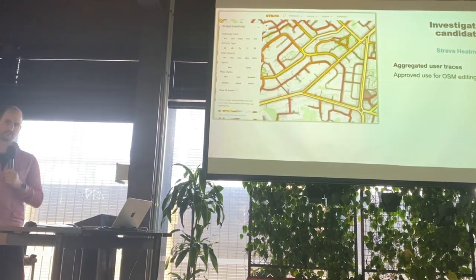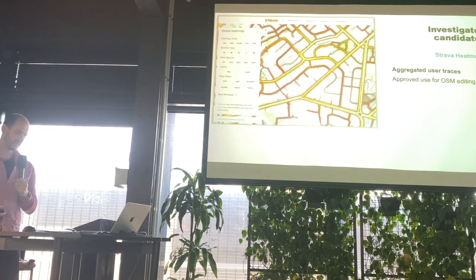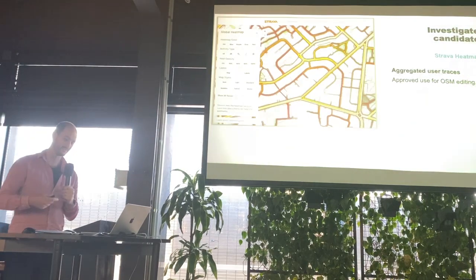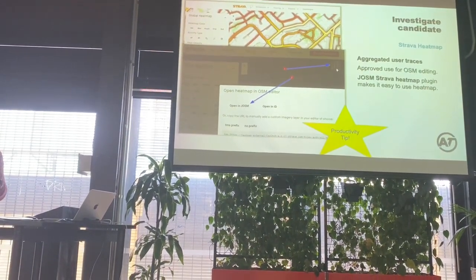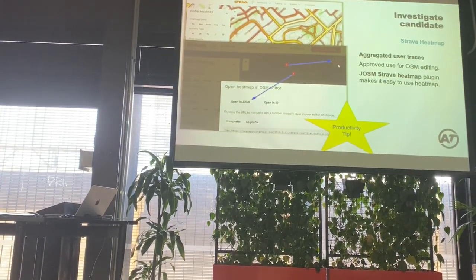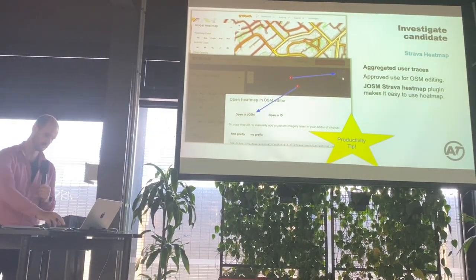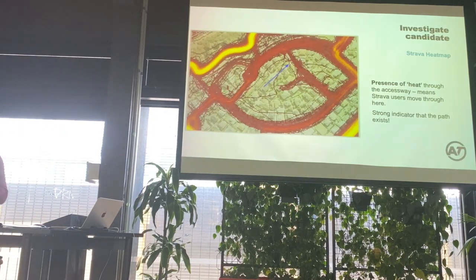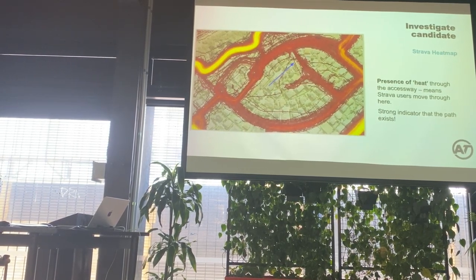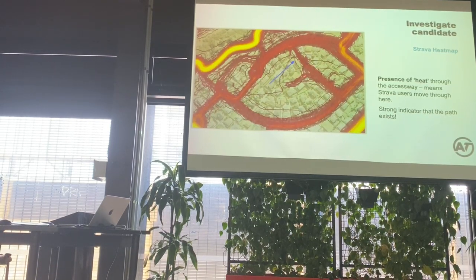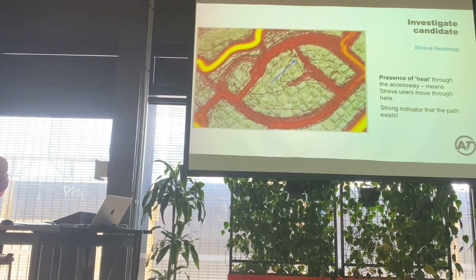The Strava heatmap aggregates all the traces from Strava users recording their runs, walks, and bike rides. You can access it on their website, and Strava have approved it for OSM editing, though it can be a little finicky to get into your editor. Another tip: a great browser plugin called JOSM Strava Heatmap, which gives you a button on the website that loads the layer directly into JOSM or iD. Here's that heatmap overlaid on our candidate — we can see heat running through there, so Strava users have been using that pathway. But there's also a private driveway showing up, so you've got to consider multiple factors.